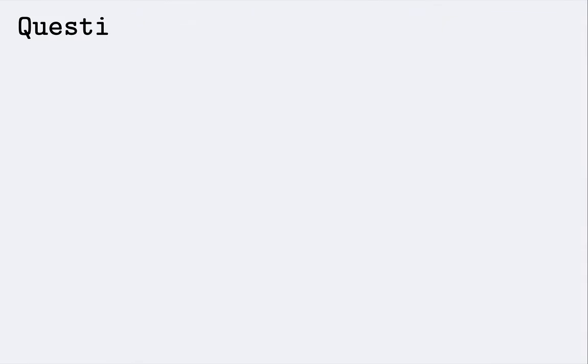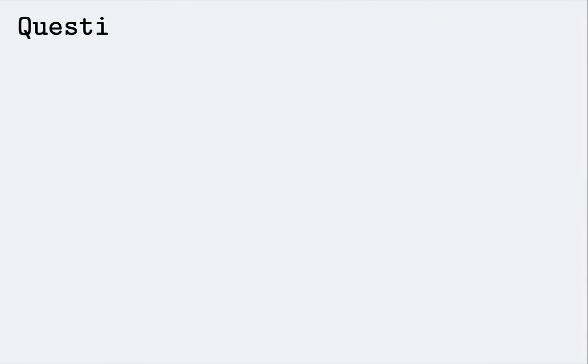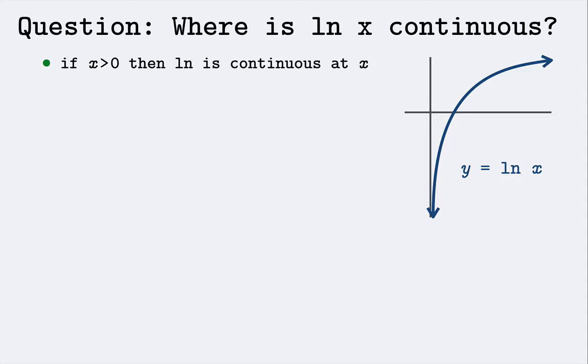So now let's ask: where is the natural log function continuous? We know that if x is greater than 0, then ln is continuous at x. Another way of saying this is: ln is continuous on the open interval from 0 to infinity. So in fact, ln is continuous on its domain.